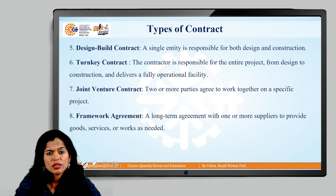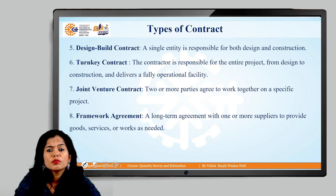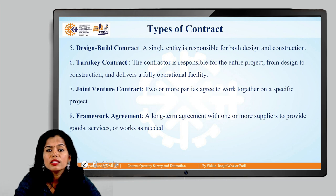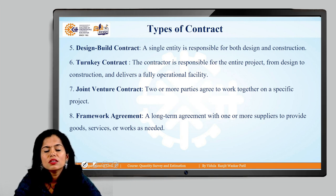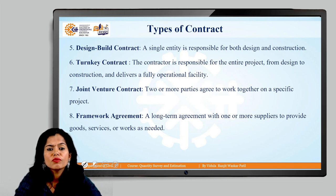Next is the turnkey contract. In the turnkey contract, the whole project responsibility — from finalizing the tender, preparing the drawings, execution of the work, and legal formalities — everything is done by the turnkey contractor. The joint venture contract: if the contract or project is big and one party is not capable of handling it alone, two parties can form a joint venture to complete the project.